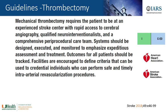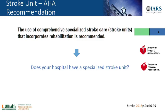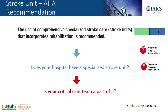Moving to guidelines: the 2018 AHA and ASA guidelines on mechanical thrombectomy suggest a comprehensive periprocedural care team, meaning post-procedure these patients require some element of more advanced care. The guidelines recommend the use of comprehensive specialized stroke care or stroke units that incorporate rehabilitation. By a show of hands — how many of your hospitals have specialized stroke units? And is your critical care team part of that unit?